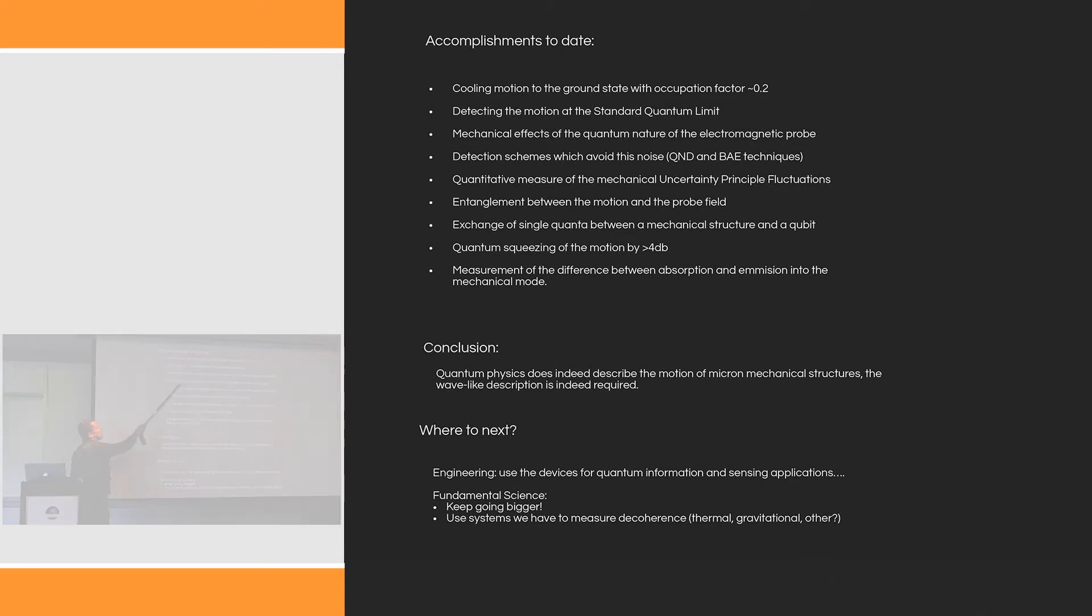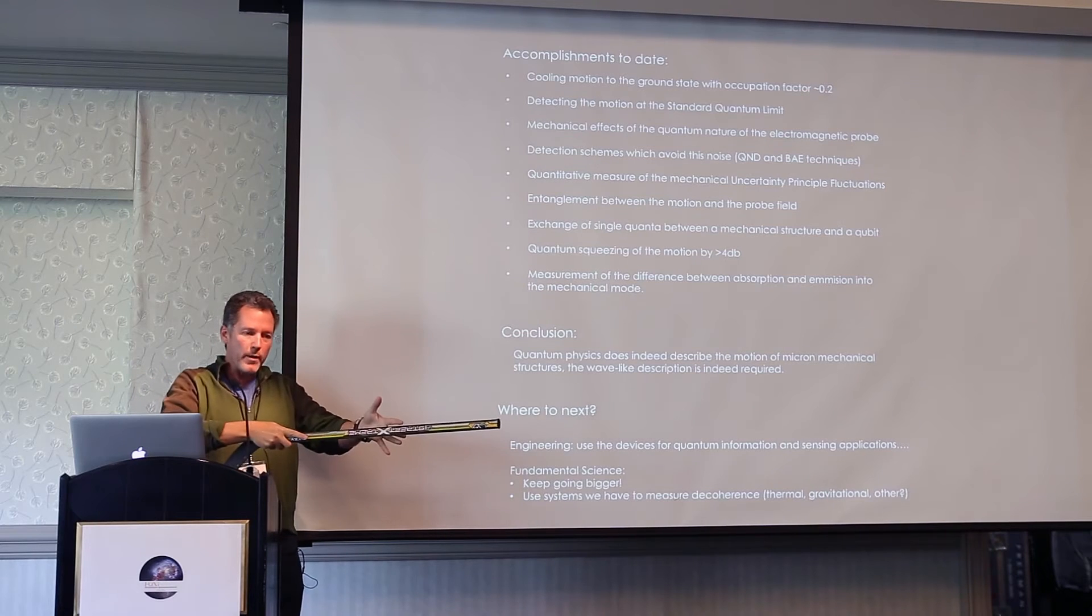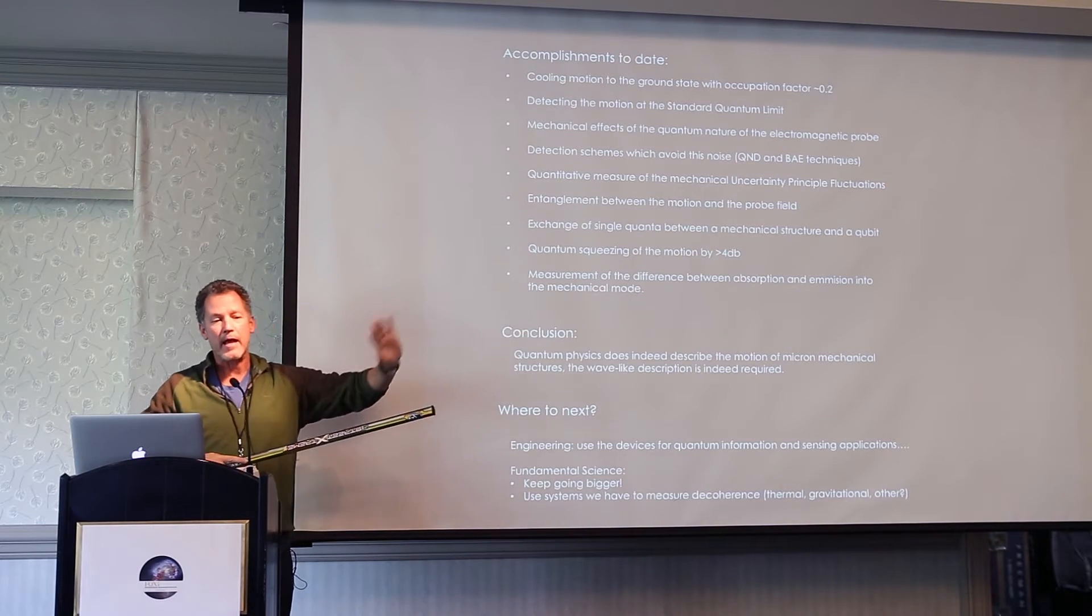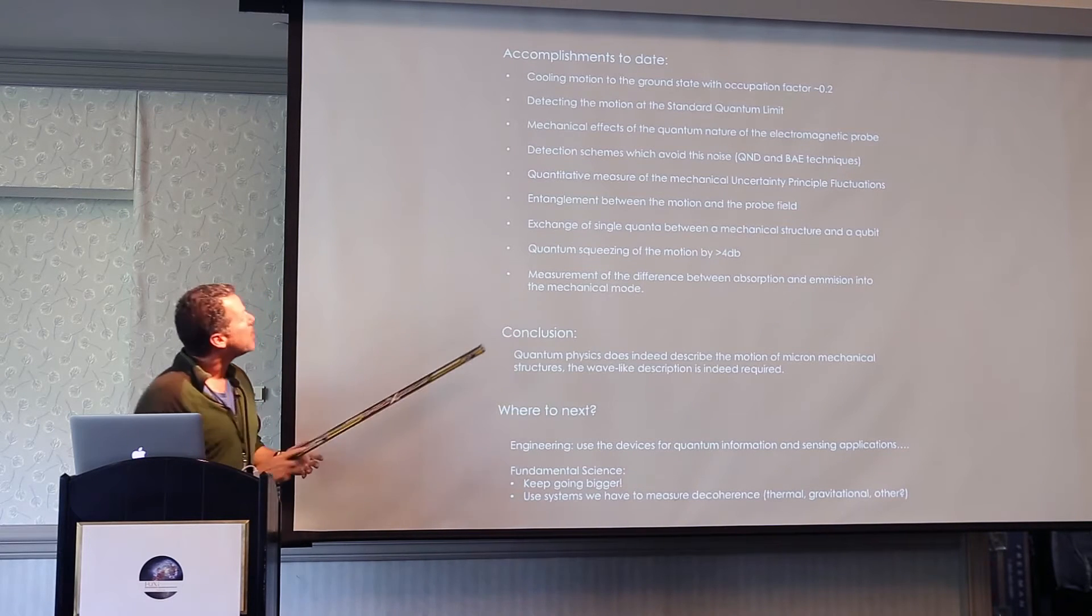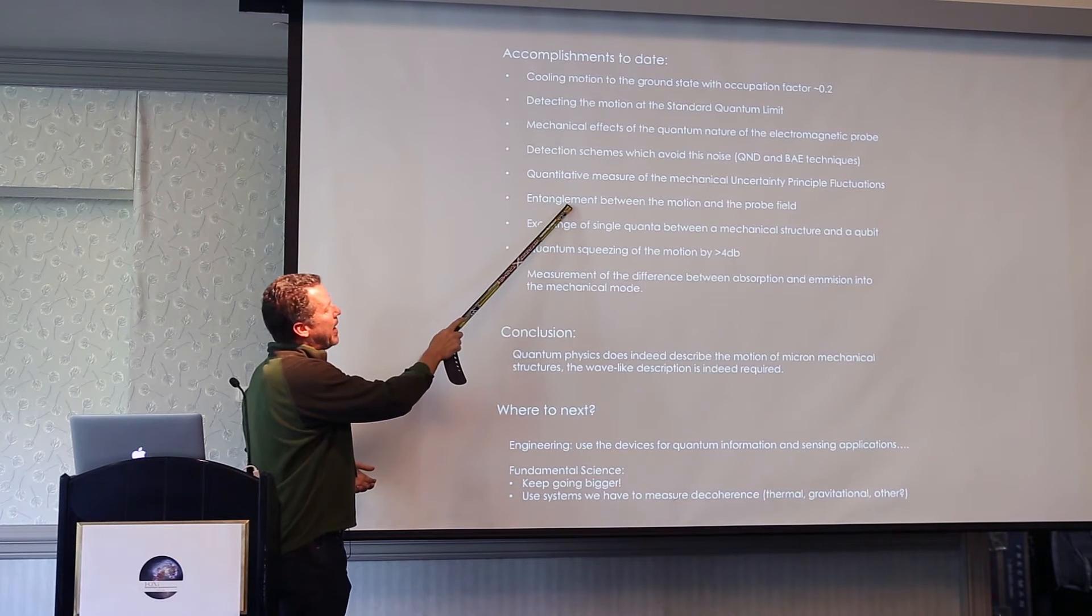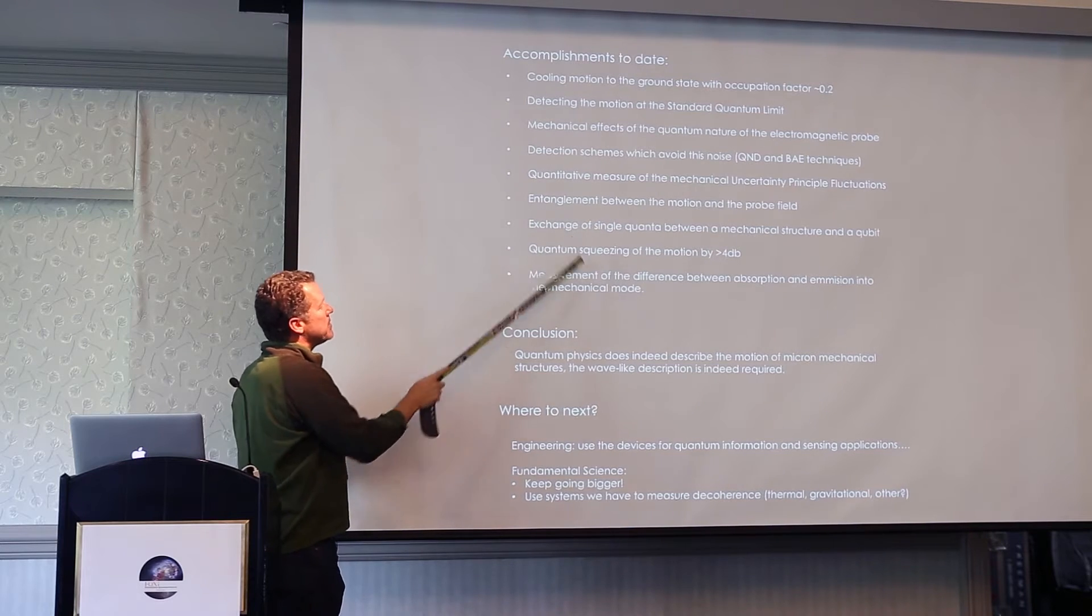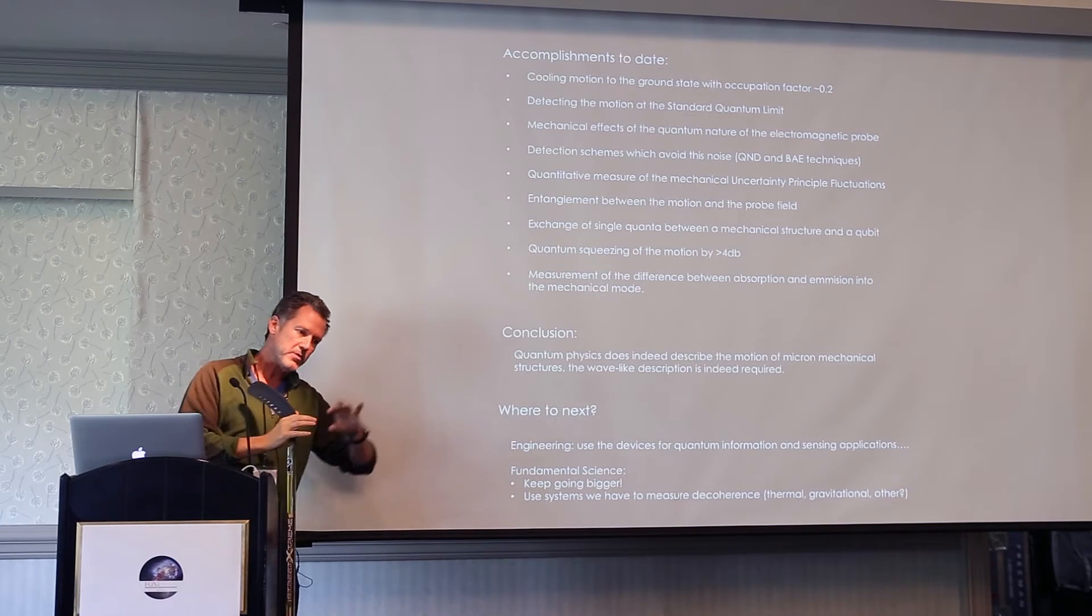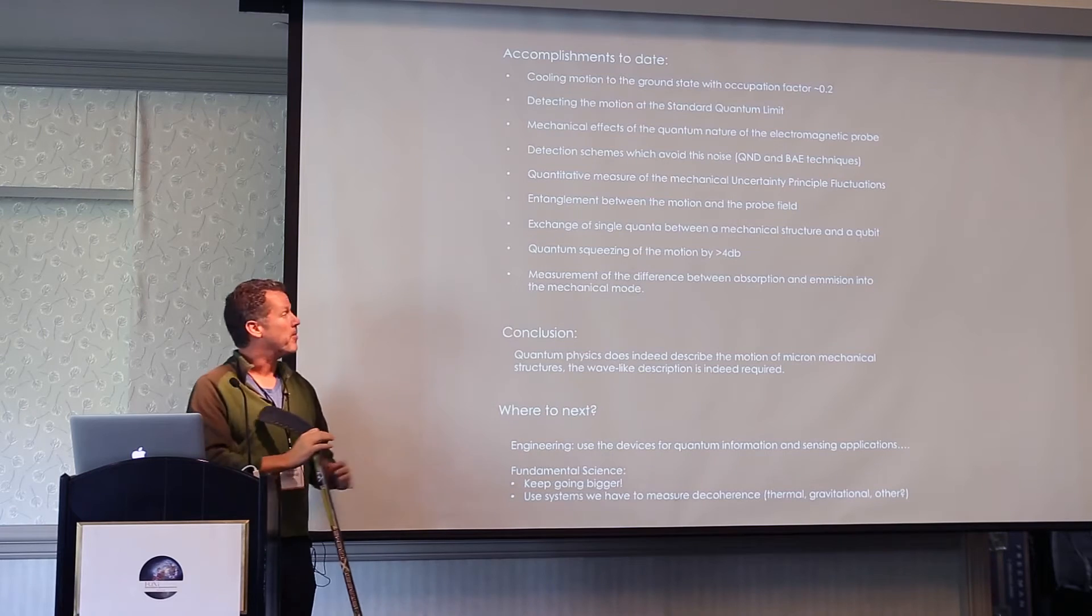We have realized quantum non-demolition schemes where we can measure one quadrature of motion, avoid detection of the other, put all the back action effects into the other quadrature. There's entanglement between the optical fields and the mechanical motion. Andrew Cleland has this beautiful experiment where he exchanged a single quanta from a qubit to the mechanics, back from the mechanics to the qubit—playing catch with a single h-bar omega, and the receiver is a little mechanical vibrating device.